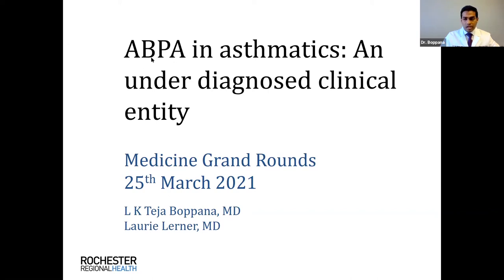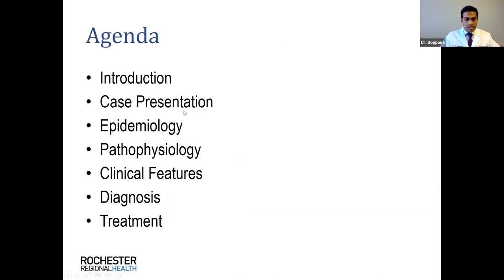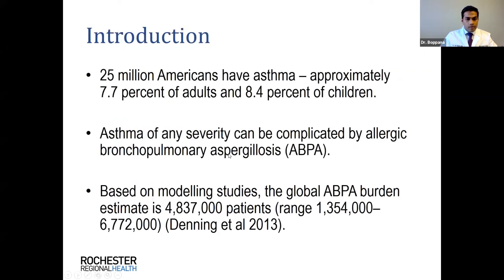ABPA is allergic bronchopulmonary aspergillosis — a hypersensitivity condition in people with asthma. Our agenda is to present a case and discuss epidemiology, pathophysiology, clinical features, diagnosis, and treatment. According to the American College of Asthma, Allergy, and Immunology, about 25 million Americans have asthma — 8% of adults and 8% of children — and asthma of any severity can be complicated by ABPA. There are no global studies on ABPA prevalence, but modeling studies estimate a global burden of about 5 million, with approximately 175,000 patients diagnosed in the United States as of 2013.